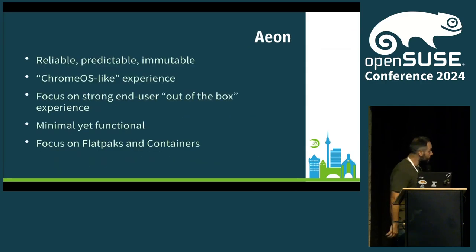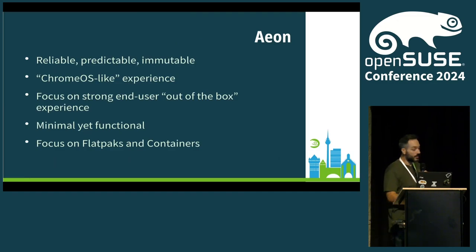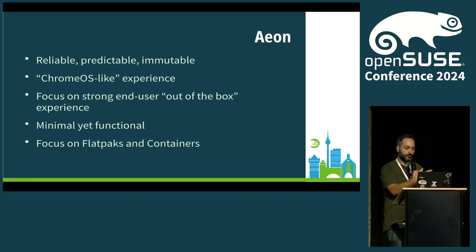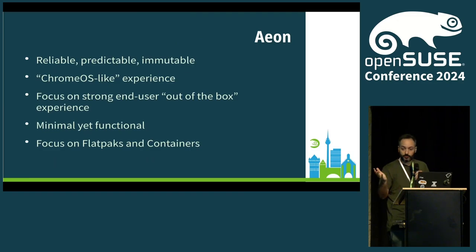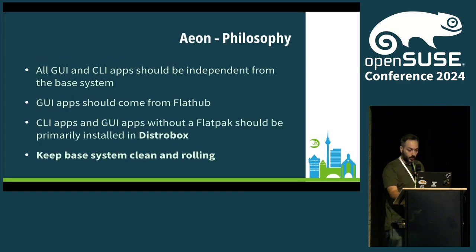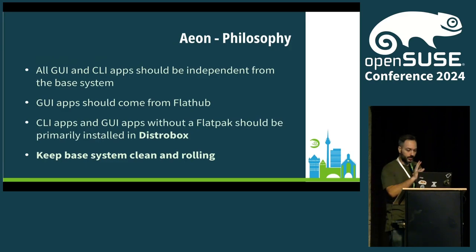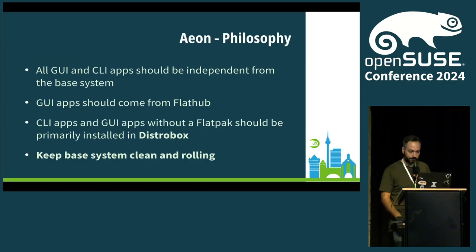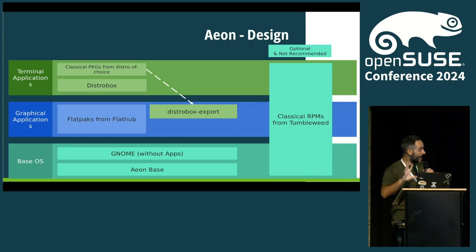Now let's talk about Aeon. Aeon is the immutable atomic distribution based on Tumbleweed and MicroOS. It's really nice — it's more like an appliance target, trying to be more like ChromeOS, fire and forget. It very much focuses on the out-of-the-box experience. It's minimal and highly focused on Flatpak and containers. The philosophy of Aeon is: leave the base system clean and alone. CLI apps should be in a container. GUI apps should be in a Flatpak, coming from Flathub so the whole community works on them.